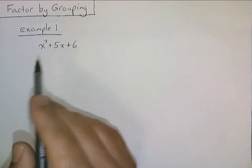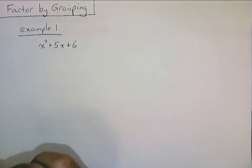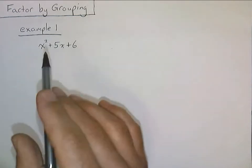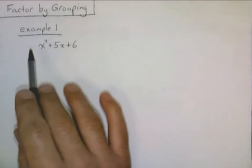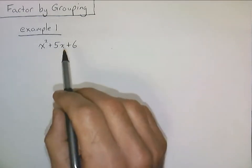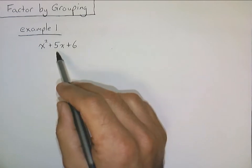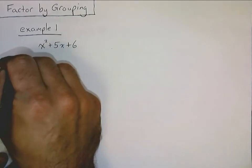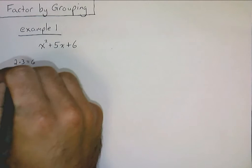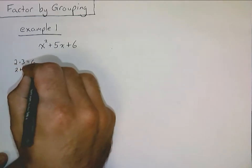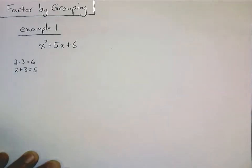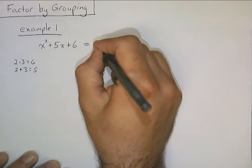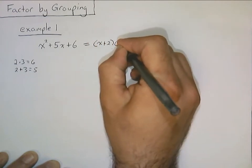I think we've already done this example before, but we want to factor this into the product of two linear binomials: x squared plus 5x plus 6. This is one of those easy cases where all you really got to do is look for two numbers that when you multiply them together you get 6, but when you add them together you get 5. The numbers that do that are 2 and 3 — 2 times 3 equals 6, and 2 plus 3 equals 5. So these are the numbers we want in our linear factors, giving us x plus 2 times x plus 3.